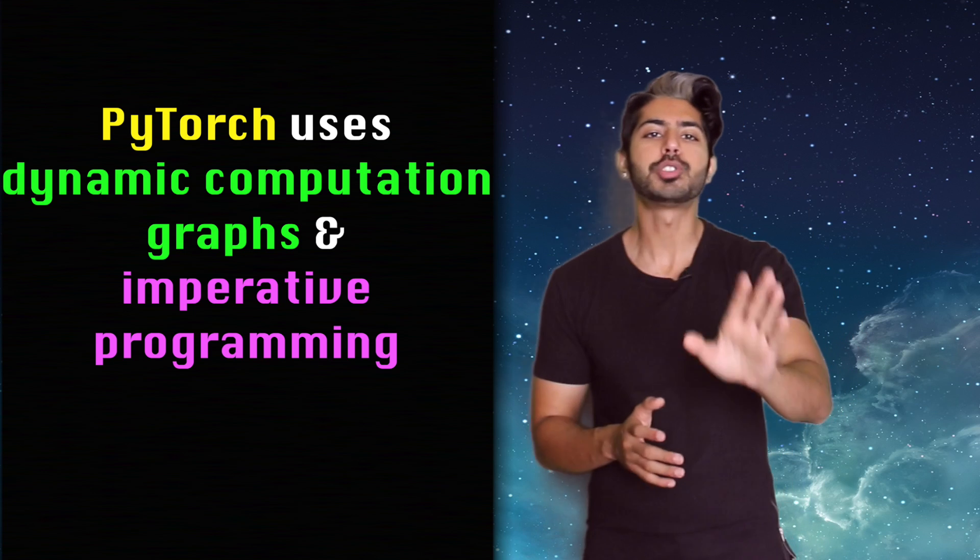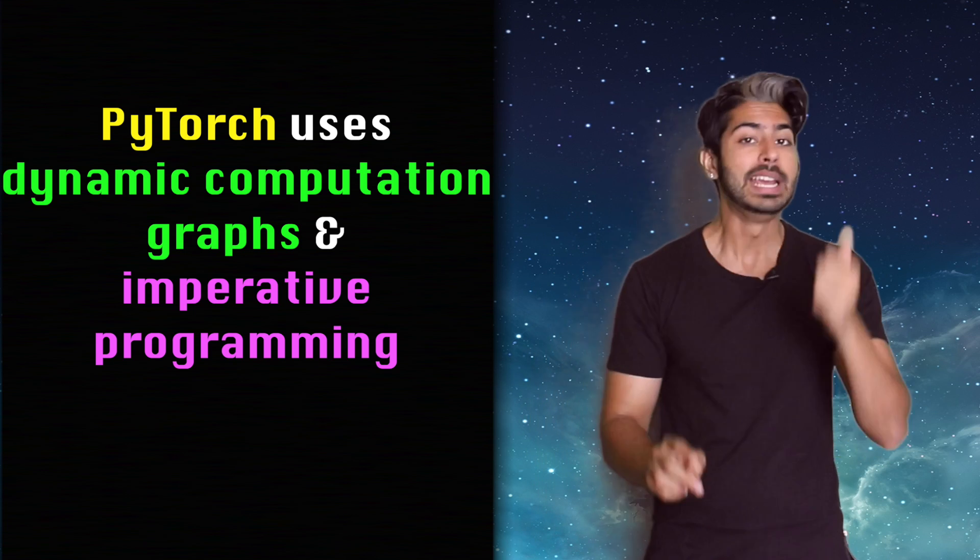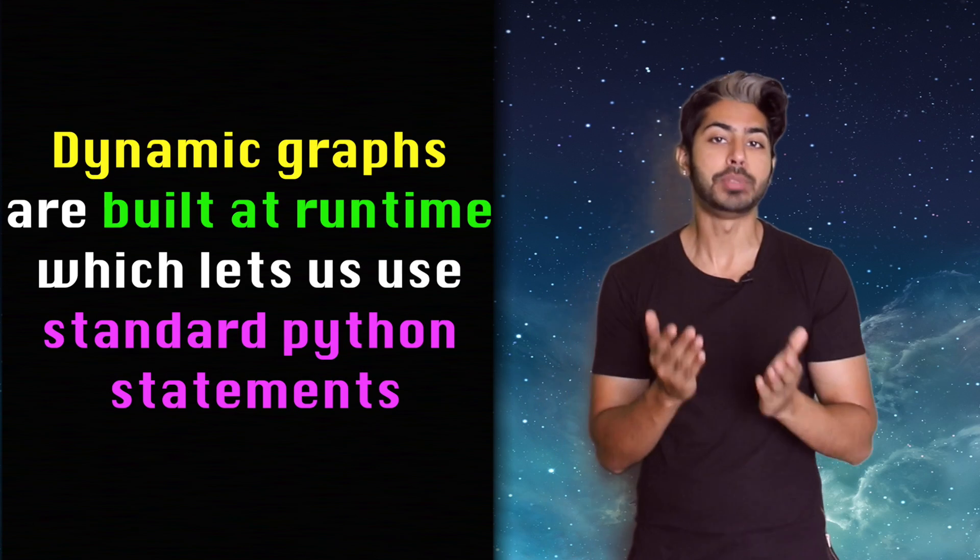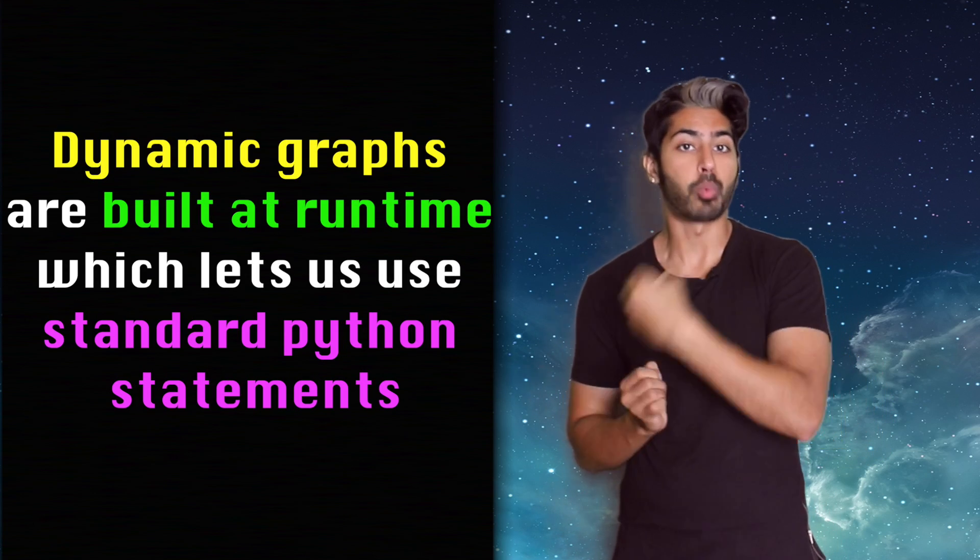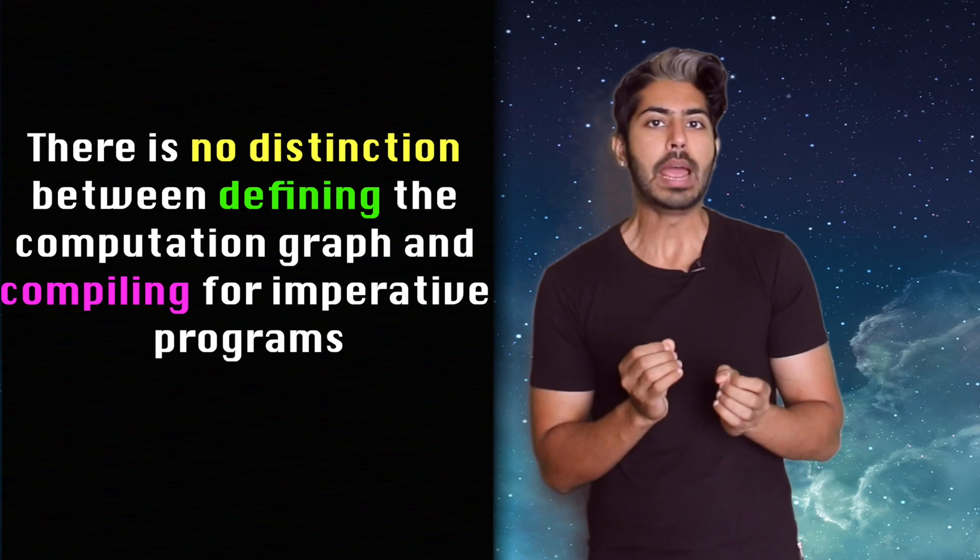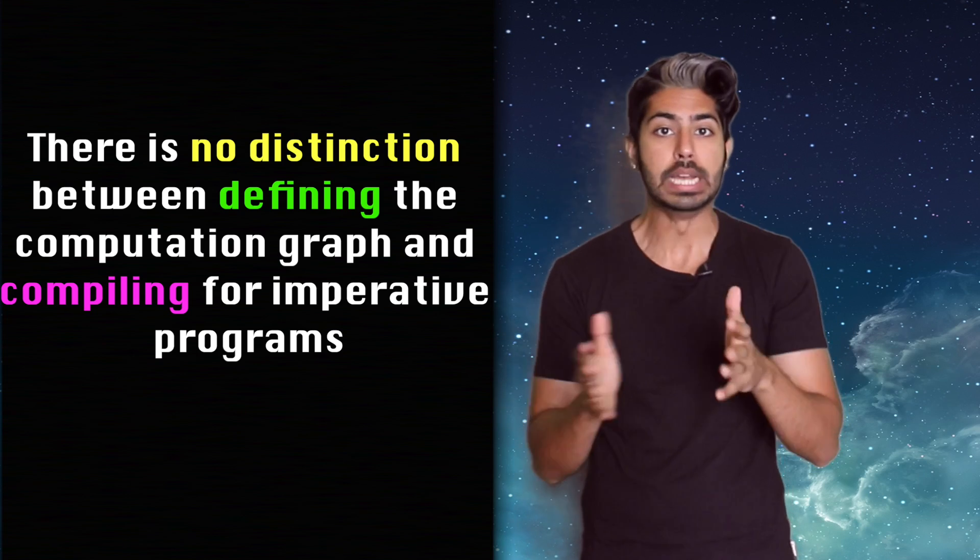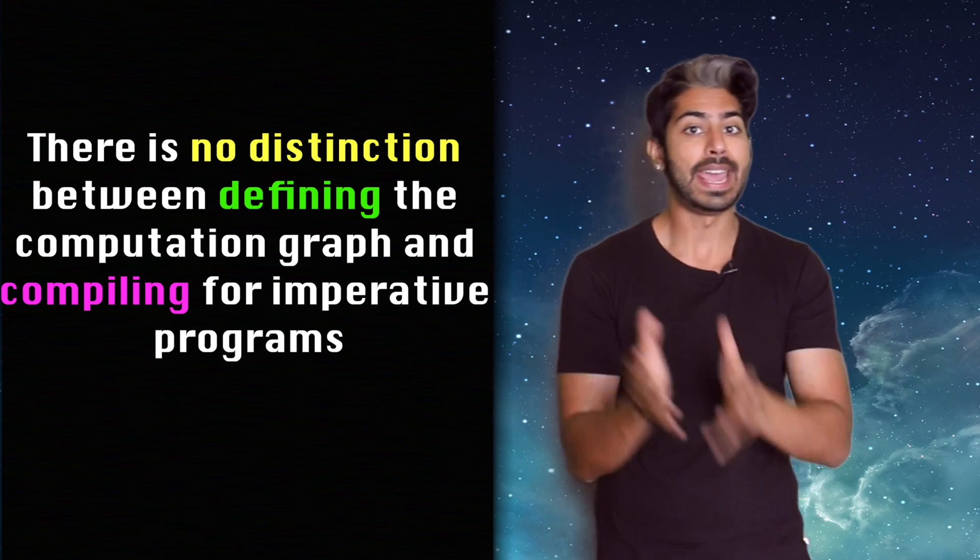Pretty dope. To sum up, PyTorch offers two really useful features: dynamic computation graphs and imperative programming. Dynamic computation graphs are built and rebuilt as necessary at runtime, and imperative programs perform computation as you run them. There is no distinction between defining the computation graph and compiling.